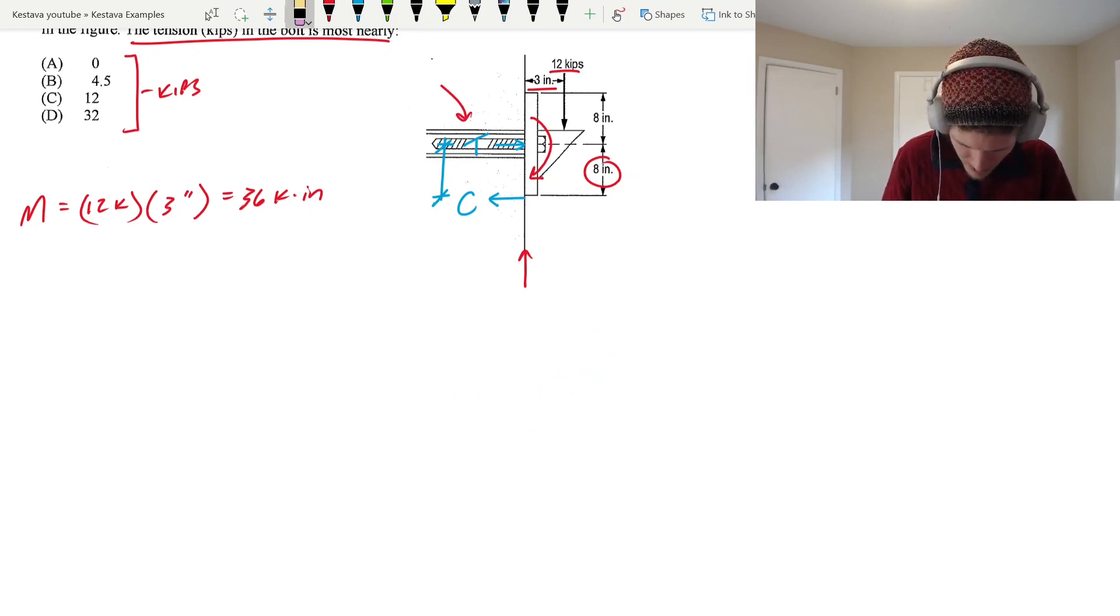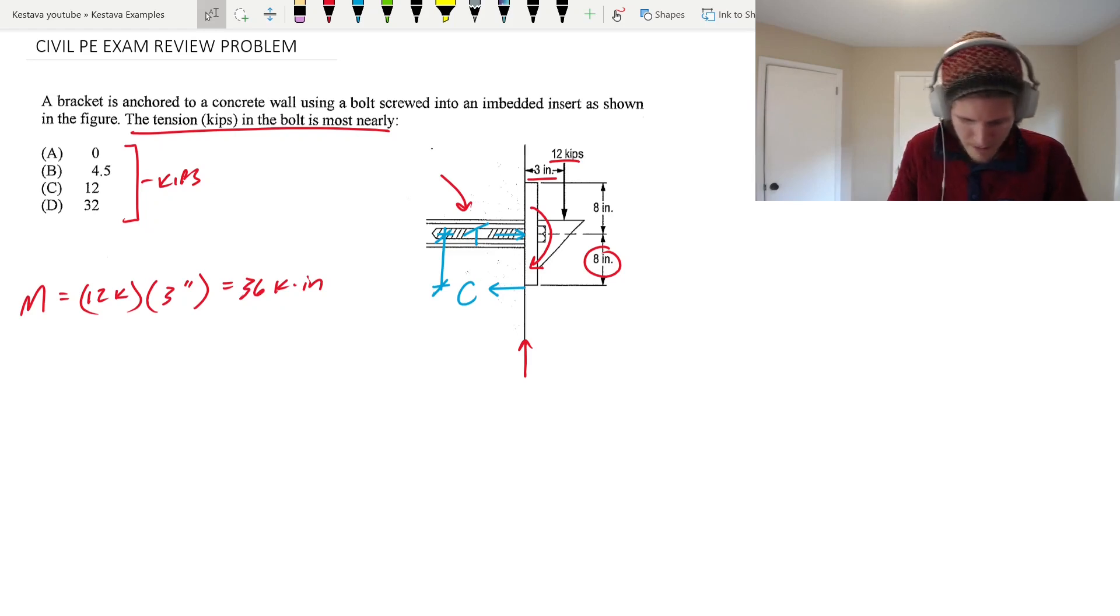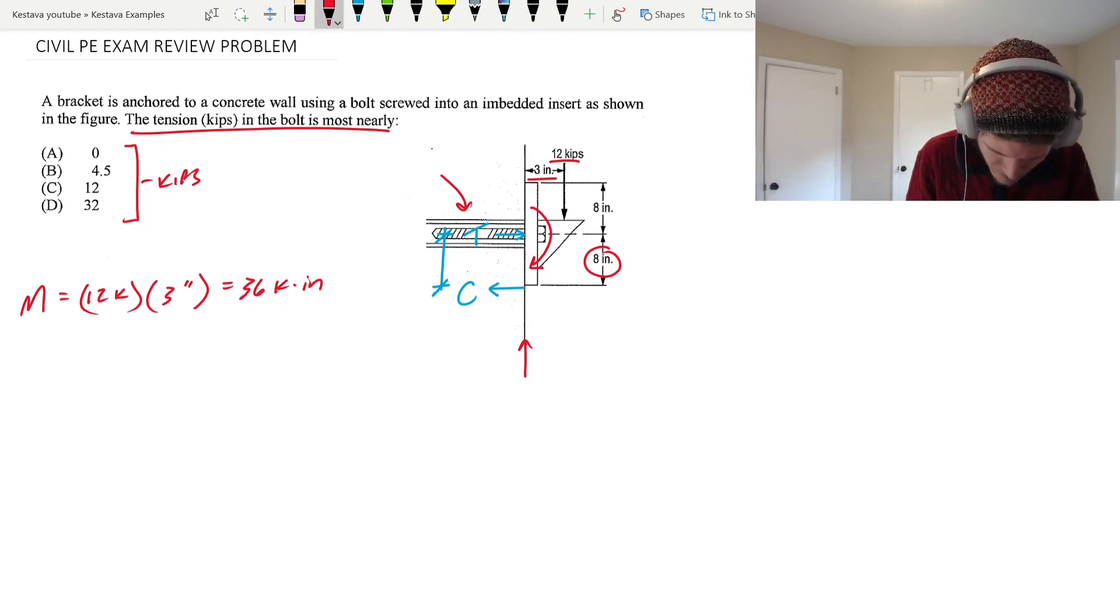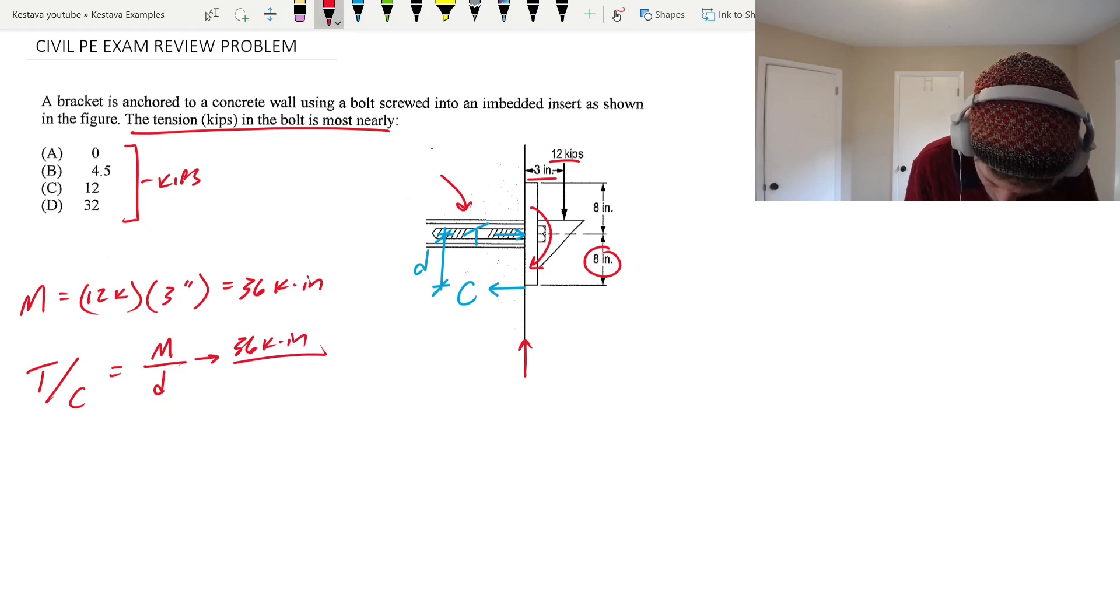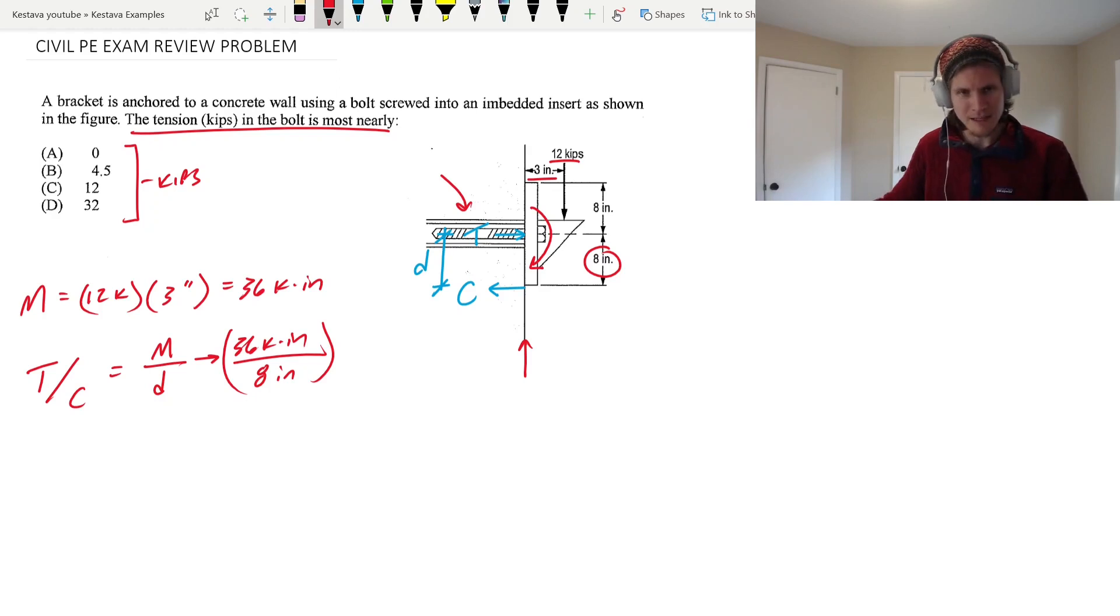Get all that out of there. Yeah, so that makes it pretty straightforward, right? Because now we have a moment, we have our couple length, and we know that tension slash compression is equal to your moment divided by the distance. We'll just call it D. And that right there is D. So that's going to break down into 36 kip inch divided by 8 inches. And we make sure that our units are good, right? So kip inch divided by inch, so those just go away.